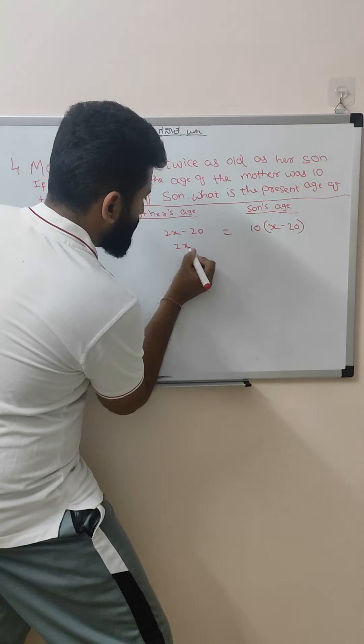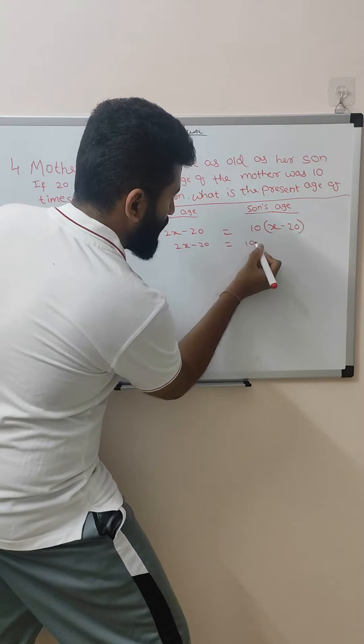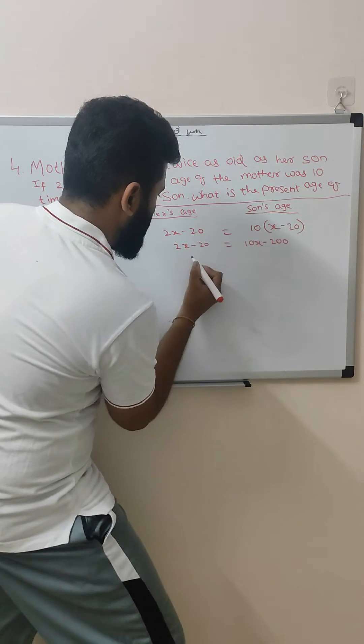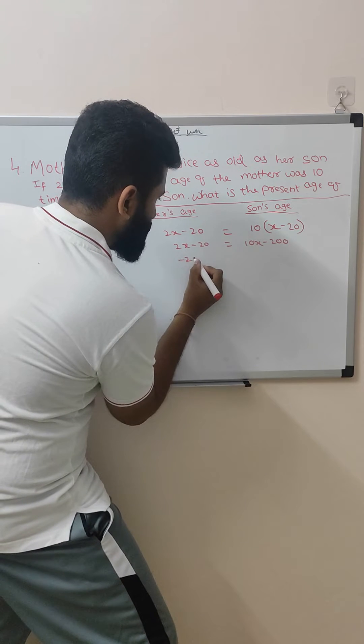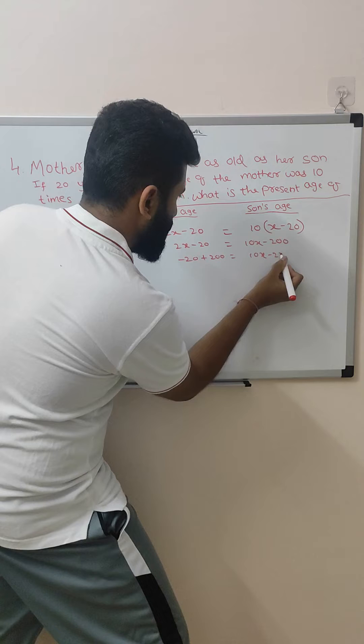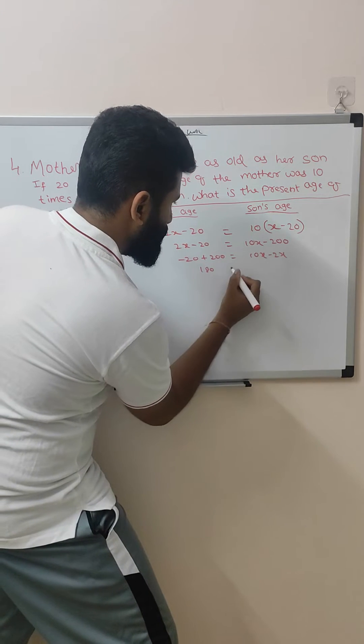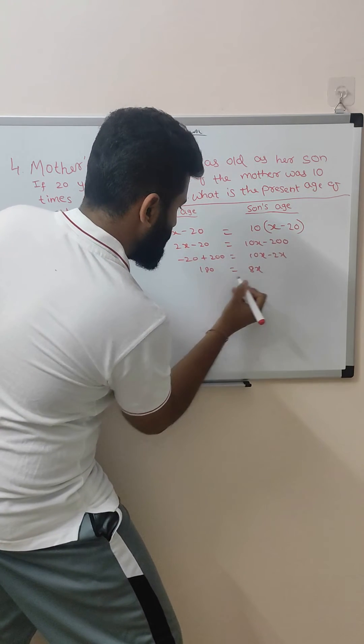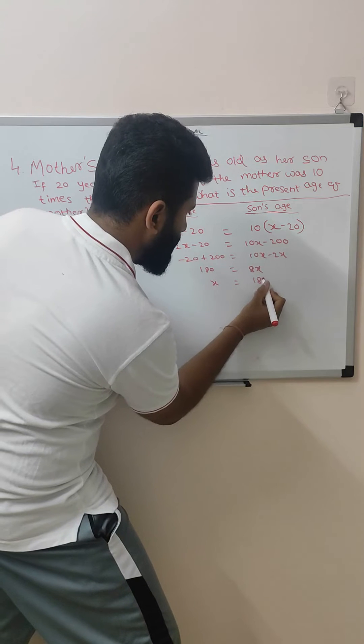2x minus 20 is equal to 10x minus 200. Minus 20 plus 200 is equal to 10x minus 2x. 180 is equal to 8x. X is equal to 180 by 80.